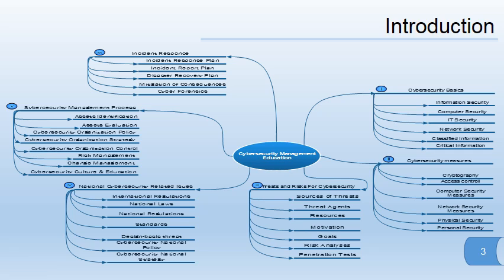The third module covers the threats and risks of cyber security. The fourth, fifth, and sixth modules are connected to related personnel management. They include national cyber security issues like laws, standards, and design-based threats. The fifth covers the cyber security management process, including economic and management aspects, and the sixth covers incident response — how to respond to incidents connected to cyber security.